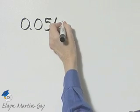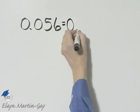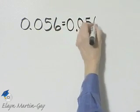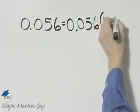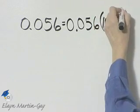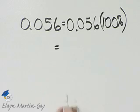To do so, I'll take this, and I'll multiply it by 1, but 1 in the form of 100%. And now we simply multiply.